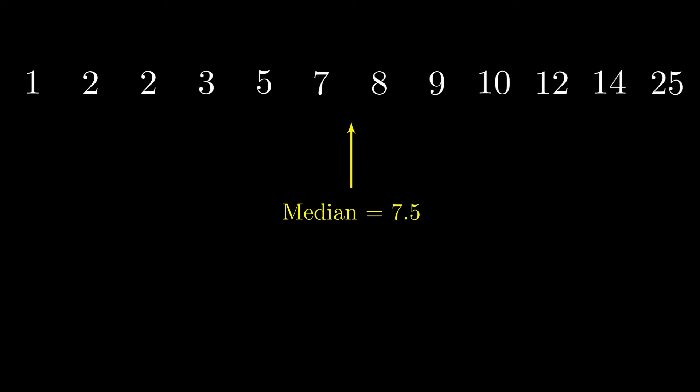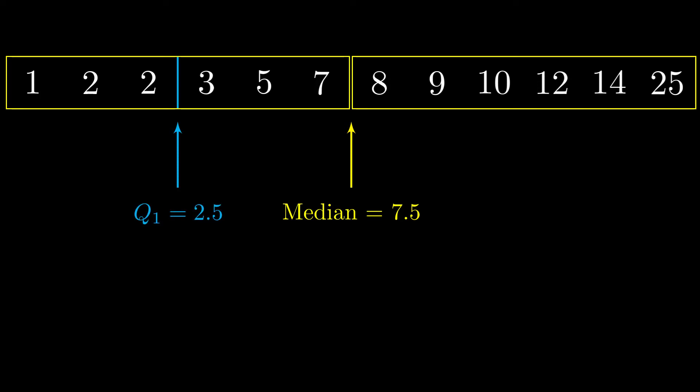And the median this time isn't actually a number in the set, so it actually makes things maybe a bit cleaner even, because we do get this equal split across the left half and the right half. And the median is not part of that, but that's okay. So on the left half, we have those six numbers there. The median of that is the first quartile, which is now going to be 2.5. And on the right, we do the same thing. We get the median of that, which is 11.